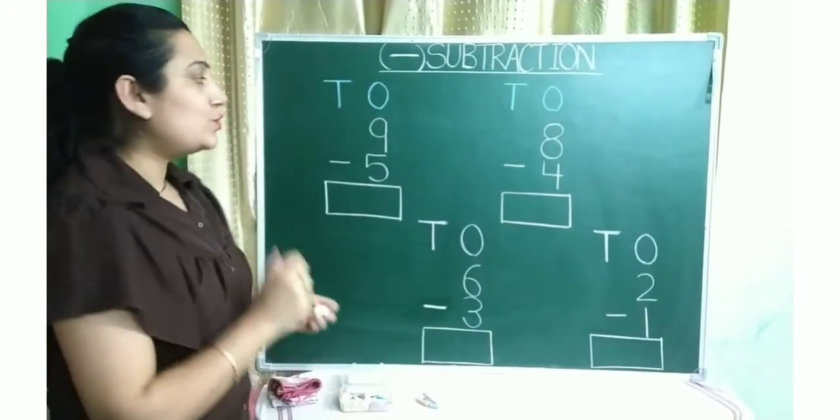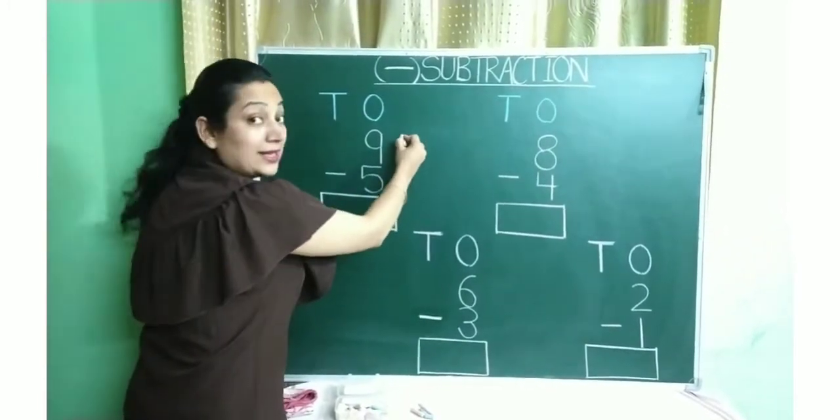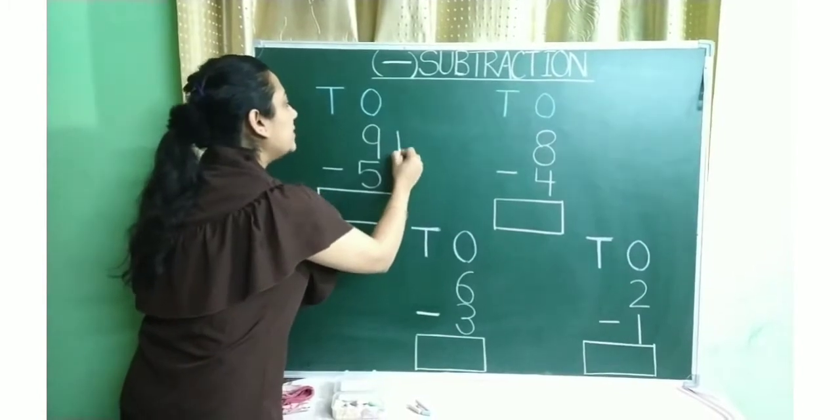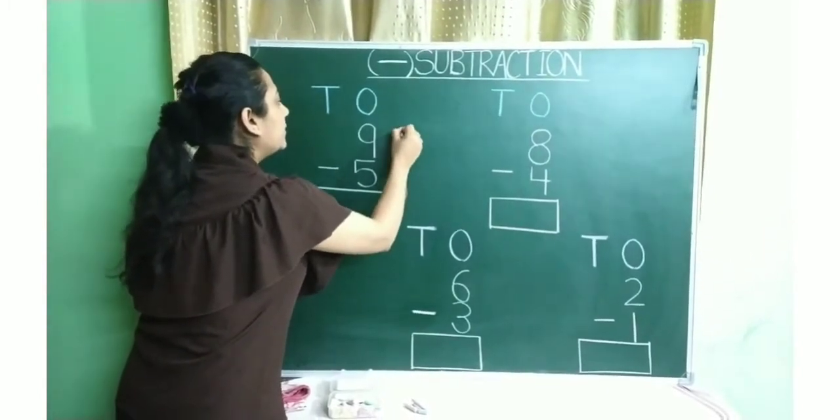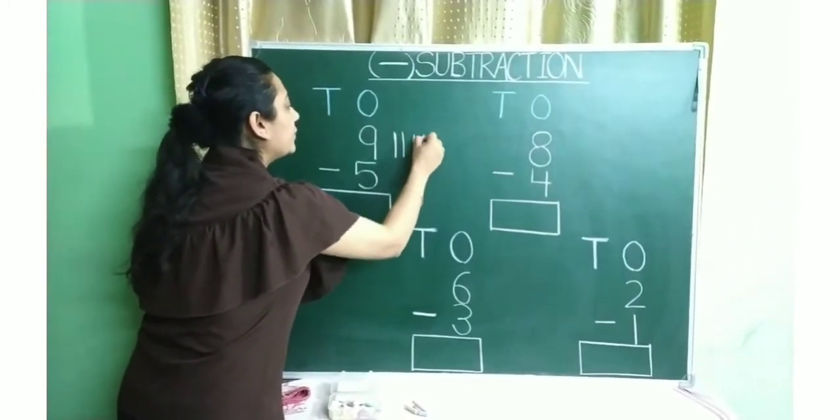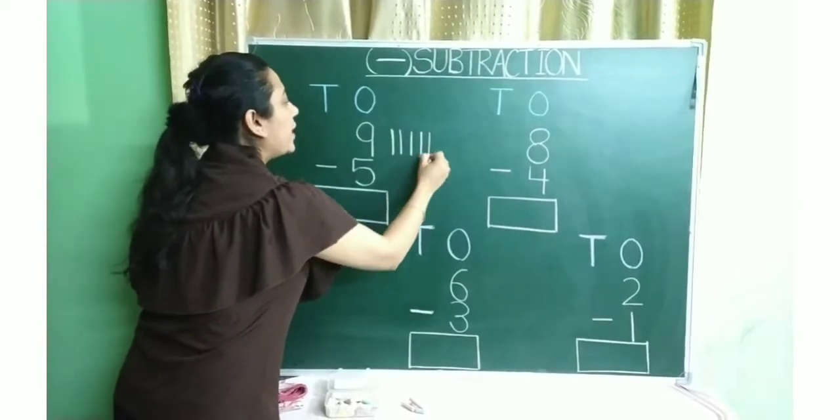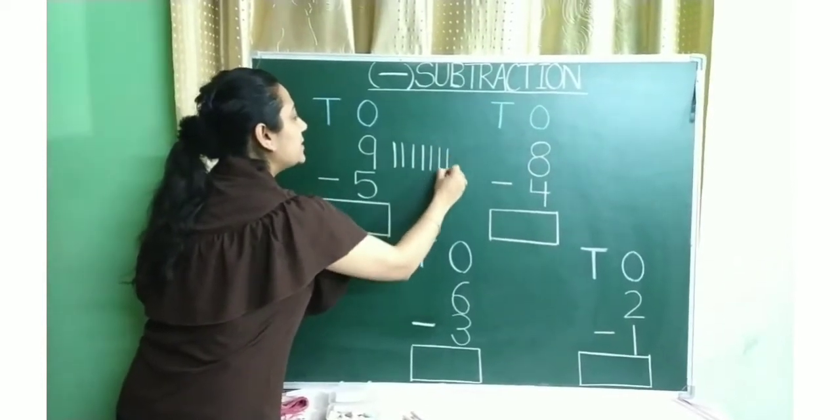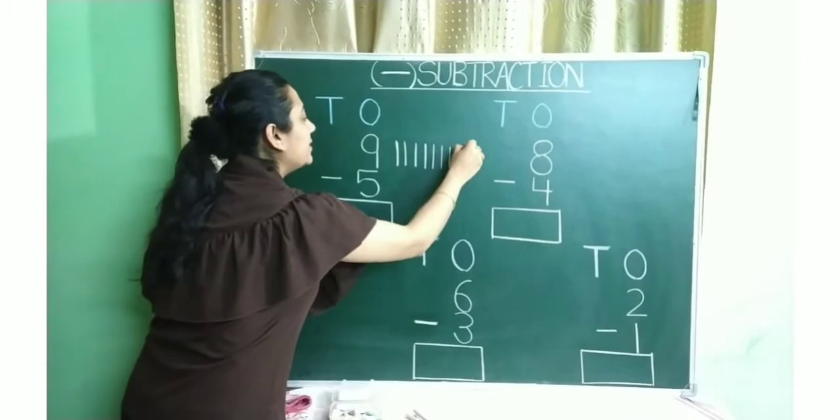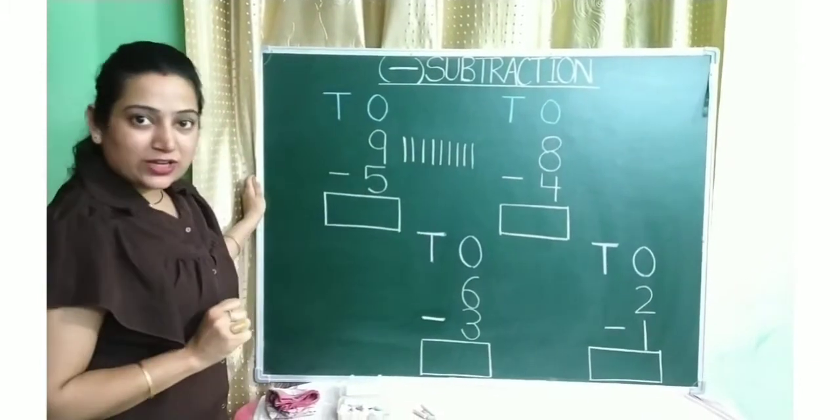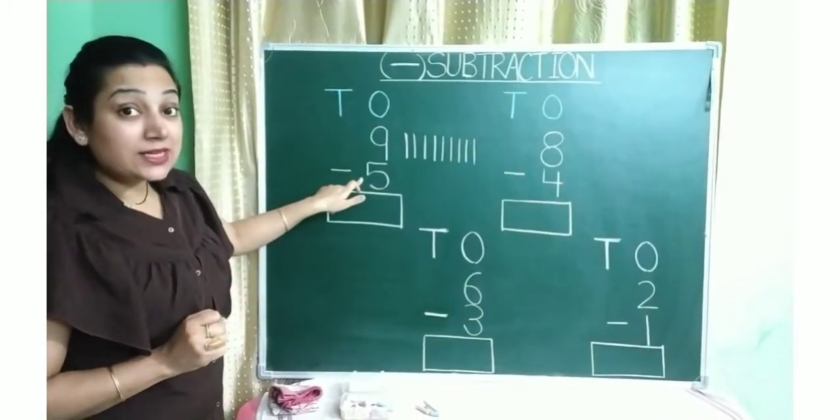So how we will do? We will make 9 standing lines. 1, 2, 3, 4, 5, 6, 7, 8 and 9. Okay children. Which number is this? 5.